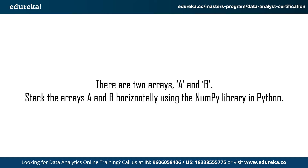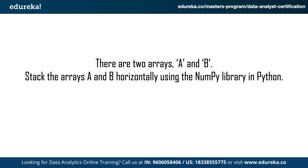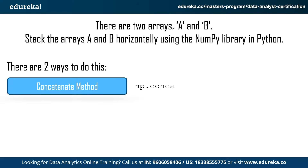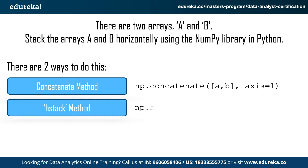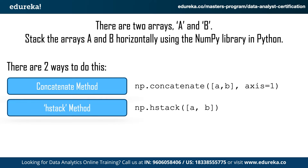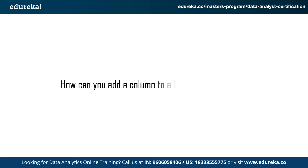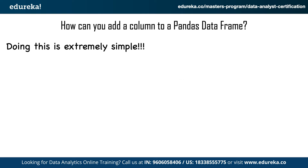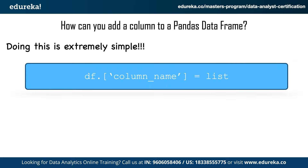The next question: given two arrays A and B, stack them horizontally using the NumPy library in Python. There are two ways to approach this. The first is the concatenate method, where you type numpy.concatenate(a, b) and mention the axis. The second method is the hstack method — another NumPy method where in the parameters you provide a list with the values [a, b]. The next question is: how can you add a column to a Pandas data frame? All you need to do is type the data frame's variable name followed by the column name, which is then assigned values from a list.